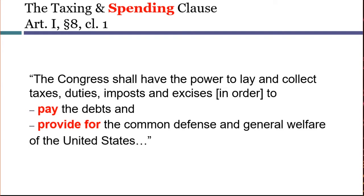So what can Congress spend its money on? The government can use its money to pay off debts, but it can also spend money on anything else that will serve the common defense and general welfare. This means the government is not limited to spending money only on those activities described in Congress's other enumerated powers — things like the power to have post offices or to support armies. For example, the Constitution has no enumerated power over medical research, but Congress could choose to spend money on medical research if Congress thinks that expenditure would be for the general welfare.